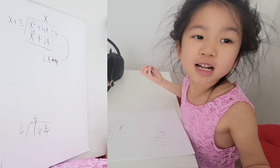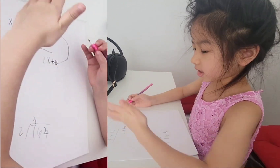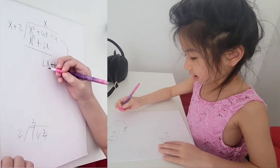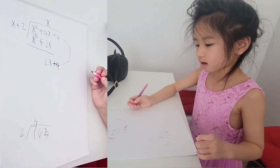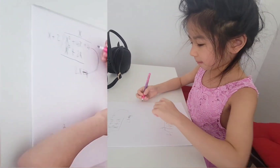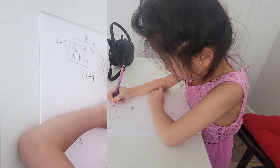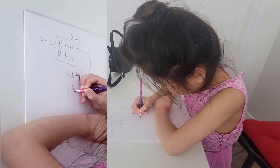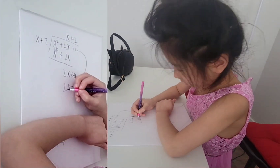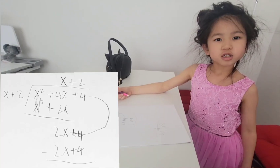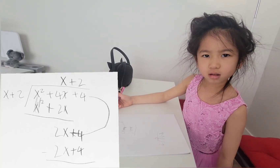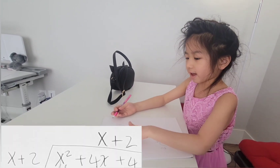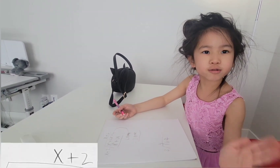The answer is 2. I'm telling you the answer because 2 times x is 2x, and that's 2x. And then 2 times 2 is 4, so plus 2. There's no remainder — down here it's 0. And the answer is up here: x plus 2 is the answer.